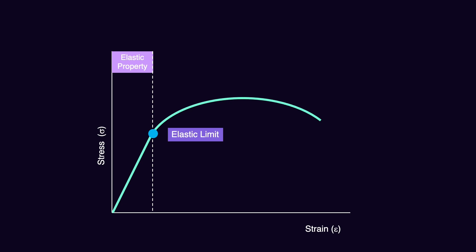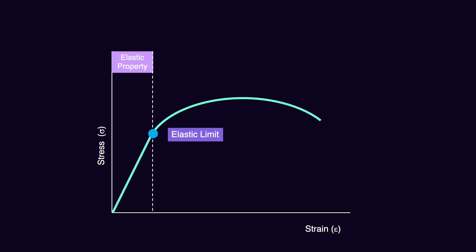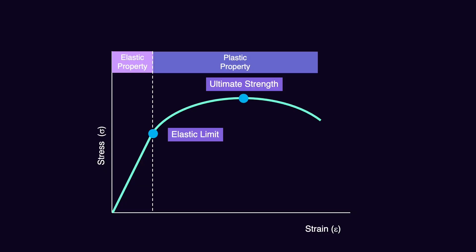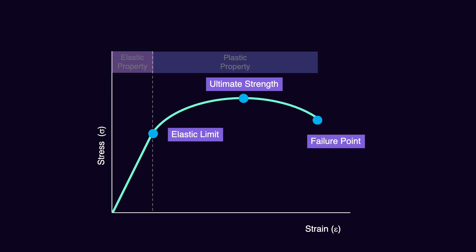First, elastic limit — you can see the elastic limit in both the stress-strain graph and load-deflection graph. It shows where the elasticity of the material ends and plasticity or permanent deformation starts. The second point is ultimate strength — the maximum amount of stress the material can accept before starting to change shape. The third is the failure point — when the material breaks.